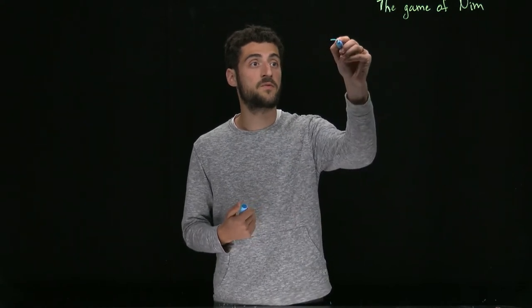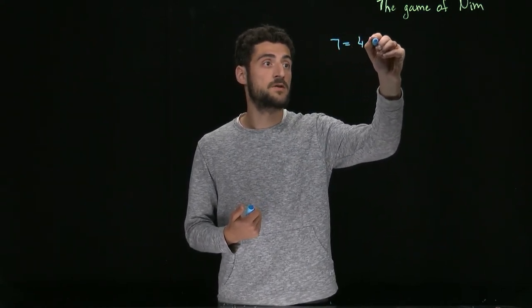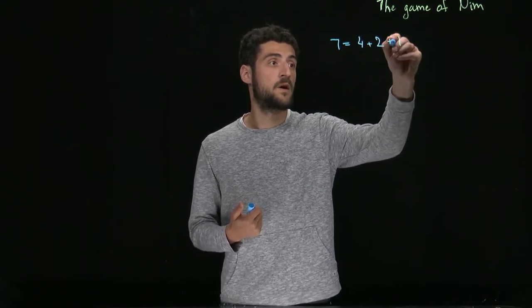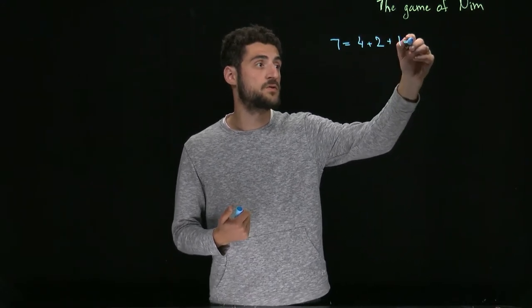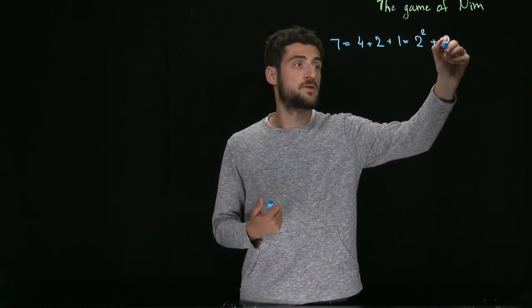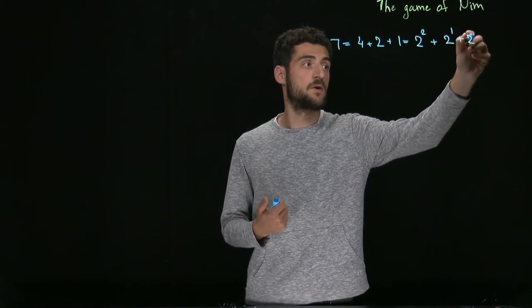To analyze the game of NIM for the number of piles more than two, we will need to talk about the base-two representation of integers. Recall that any integer can be written as a sum of powers of two. For example, seven is the sum of four, two, and one, which are two squared plus two to the one plus two to the zero.